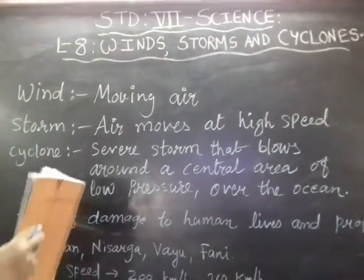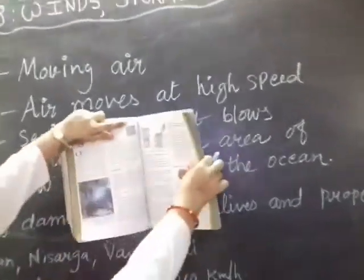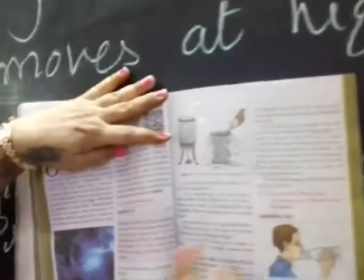One figure is given in the textbook. Here it is — an image is given. It is an image taken by a satellite of a cyclone approaching the coast of Orissa. This image was taken by the Indian Meteorological Department, New Delhi. You can check it in your textbook.